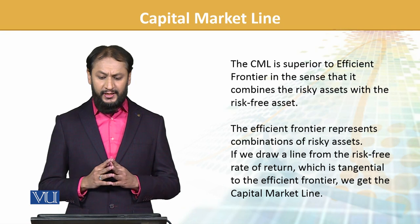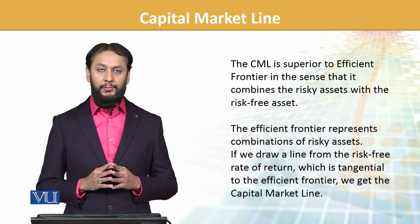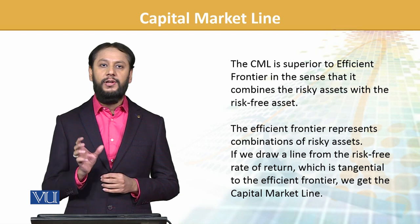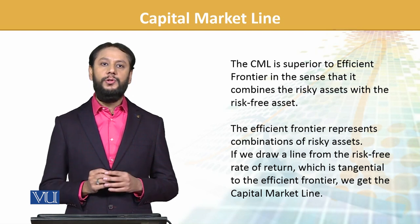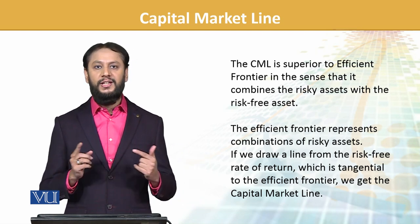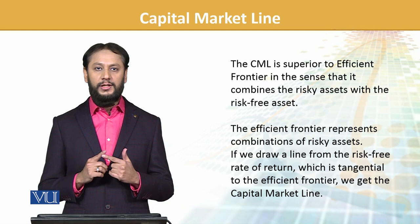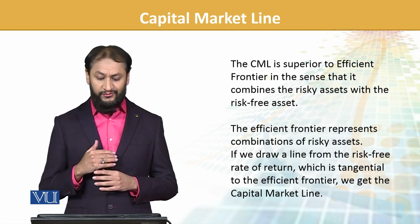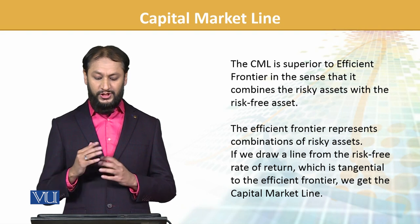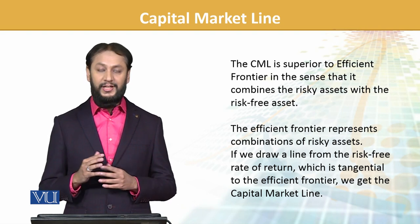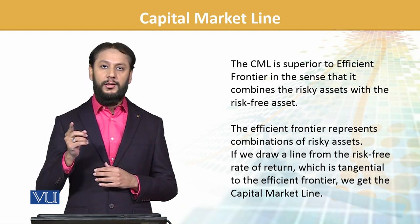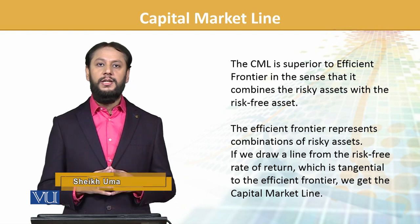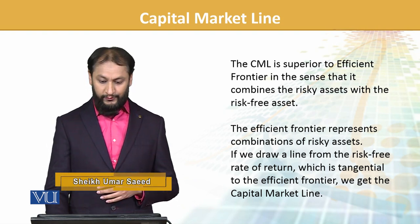CML is superior to the efficient frontier because the efficient frontier only captures risky assets, whereas CML also incorporates the combination with the risk-free asset. Efficient frontier represents risky assets. If we draw a line for the risk-free return which is tangent, we get the CML — joining the market return with the risk-free rate gives us the CML.